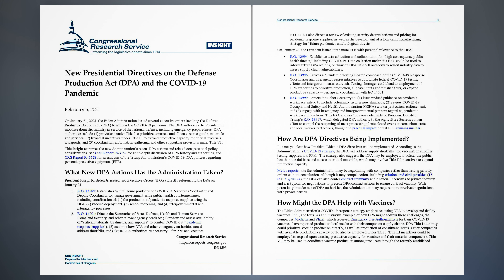EO 14,001 directs the Secretaries of State, Defense, Health and Human Services, Homeland Security, and other relevant agency heads to: 1. Review and assess availability of critical materials, treatments, and supplies to combat COVID-19 (pandemic response supplies); 2. Examine how DPA and other emergency authorities could address shortfalls; and 3. Use DPA authorities as necessary for PPE and vaccines. EO 14,001 also directs a review of existing scarcity determinations and pricing for pandemic response supplies, as well as the development of a long-term manufacturing strategy for future pandemics and biological threats.